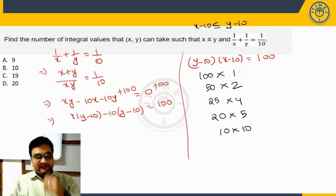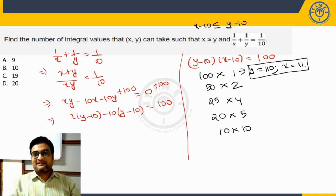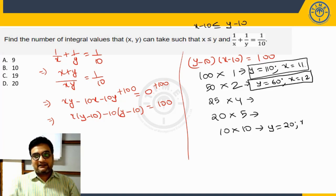If you take this pair, y minus 10 is 100 would mean y will be equal to 100 plus 10, isn't it? x minus 10 equal to 1 would mean x is equal to 10 plus 1 which is 11. This is one possible solution, acceptable solution because x is less than or equal to y. Similarly, you will get another acceptable solution here, one more here, one more here, one more here. Here you will get y equal to 20, x equal to 20. Both are equal, that is also an acceptable solution.